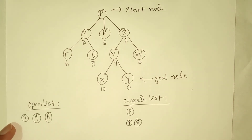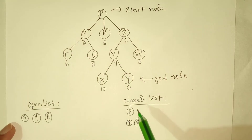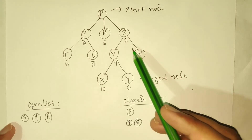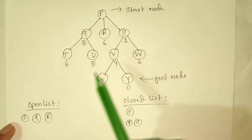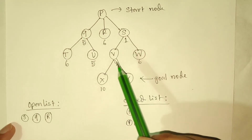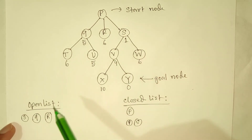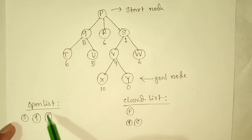If we have reached the goal node, we will stop the algorithm. If we have a goal node, we will start backtracking. If we are at a goal node, we can finalize the algorithm. If not, we will drop and continue the algorithm. The algorithm will continue until the goal node is found.